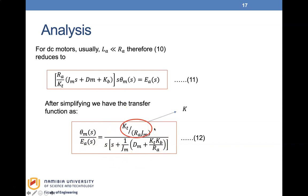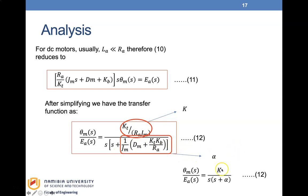We can simplify this by calling the numerator constant K and the denominator pole α. So the transfer function can be written in the simplified form: K / [S·(S + α)]. The detailed expressions are: K = KT/(RA·JM) and α involves DM, JM, KB, KT, and RA.